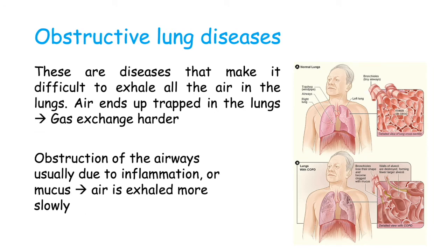Next, let's talk about obstructive lung diseases. These are diseases that make it difficult to mainly exhale all the air in the lungs. While in restrictive lung disease the difficulty was in inhaling air as the lungs wouldn't expand, obstructive lung disease is mainly about being unable to exhale all that air. You end up with air trapped in the lungs, which makes gas exchange a lot harder. This obstruction is usually due to inflammation or mucus, causing air to be exhaled more slowly.